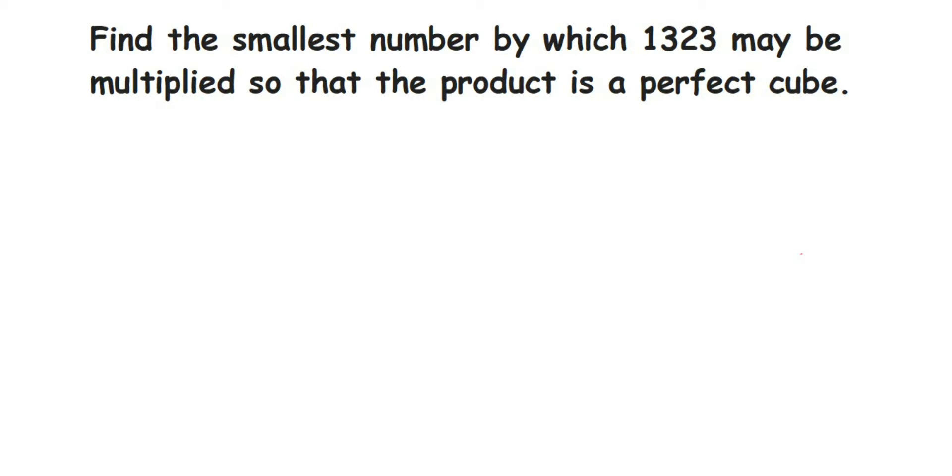Hi everyone, here's a question on cube roots. Find the smallest number by which 1323 may be multiplied so that the product is a perfect cube. This number is not a perfect cube. We have to find the smallest number to multiply with it so that the product becomes a perfect cube.